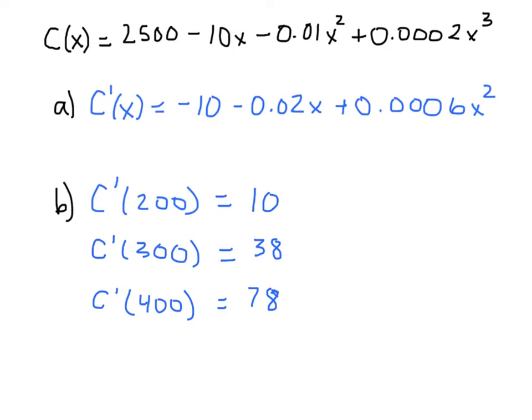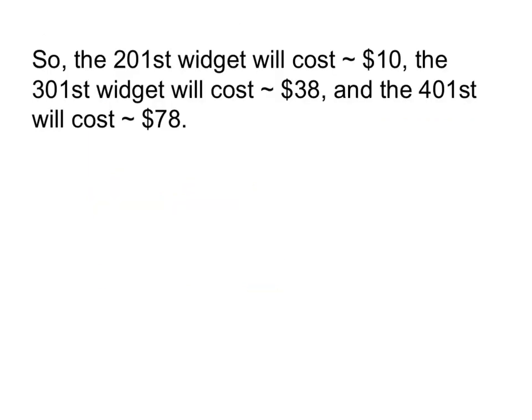Now remember, these values are measured in dollars per widget. In fact, what we've done is approximate the 201st, 301st, and 401st—the cost to produce each of those widgets. When you do C'(200), that estimates the cost for the 201st widget. So the 201st widget will cost approximately $10. In the same way, the 301st widget will cost approximately $38, and the 401st widget will cost approximately $78 to produce.